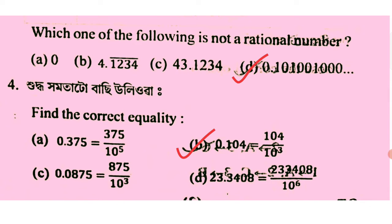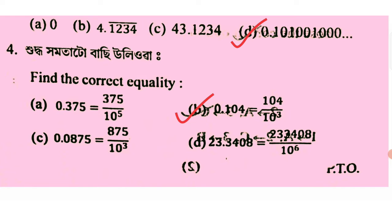The next one is the 10th version. This option is 0.104, equal to 104 by 103. The first one is 0.375, which is 375 by 103 by 105.